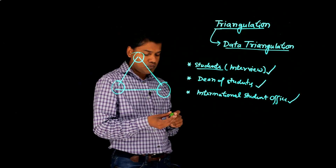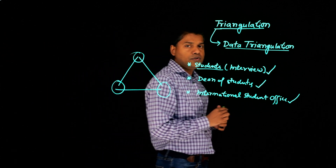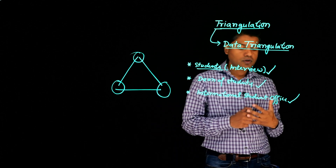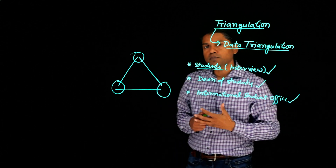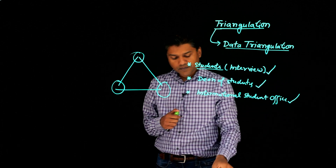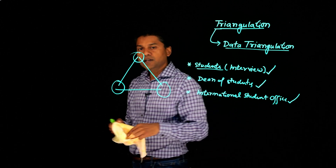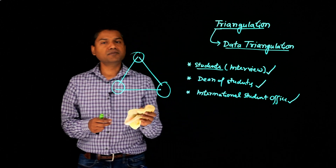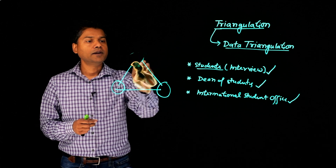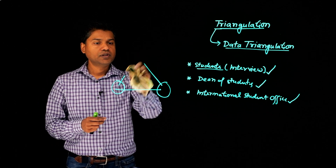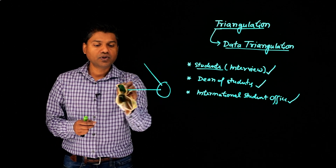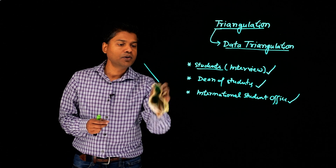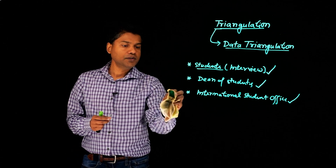In summary, data triangulation is an approach of collecting data from multiple sources to have a comprehensive understanding of the phenomenon that a qualitative researcher is trying to understand. That's briefly about data triangulation.